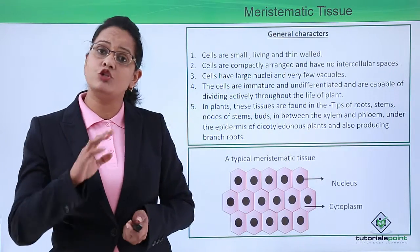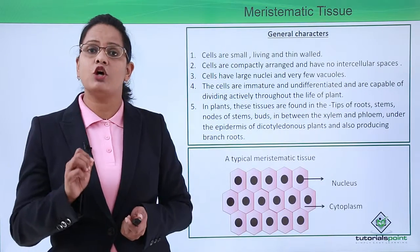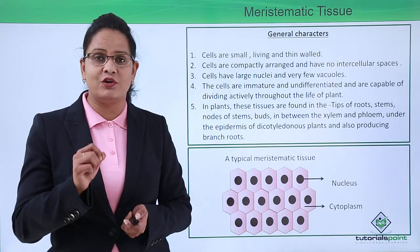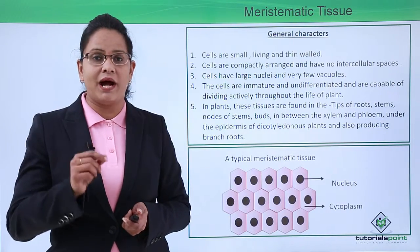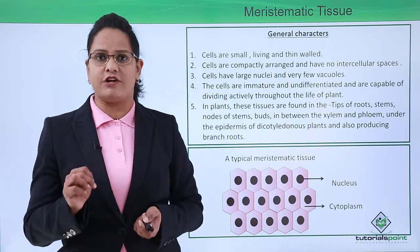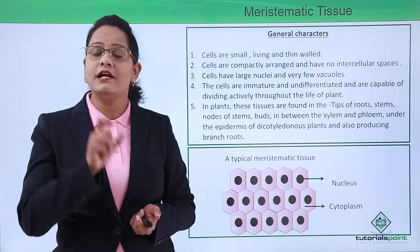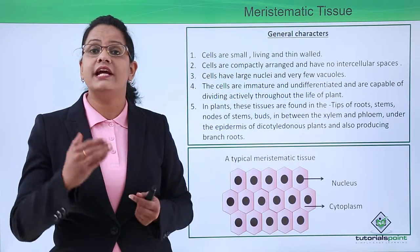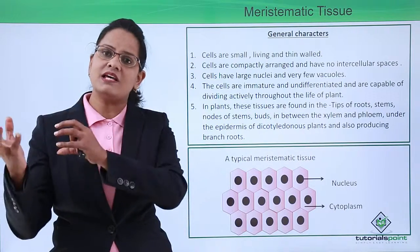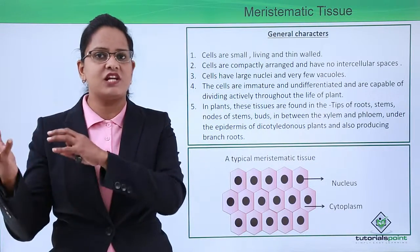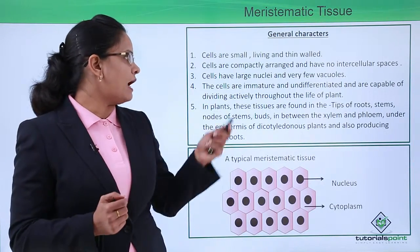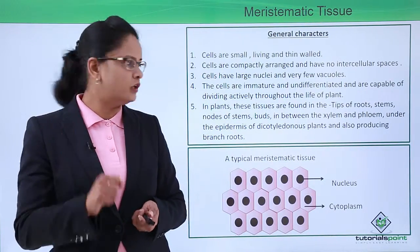These cells are immature throughout the life — immature means they always remain young, they remain young forever. We get old but the plant meristematic cells never get old, and they are undifferentiated. Undifferentiated means that they do not specialize. They simply form a mass of cells, and later some part of the mass specializes into different organs and they again start dividing. They are capable of active division throughout the life of the plant.